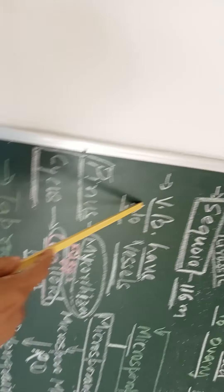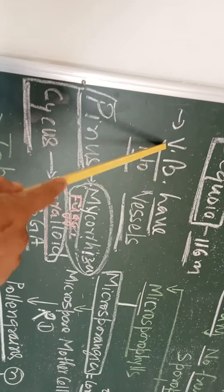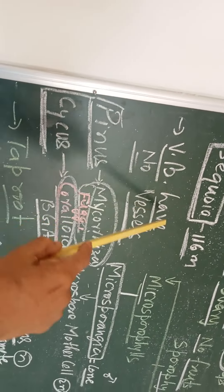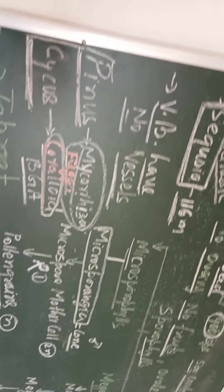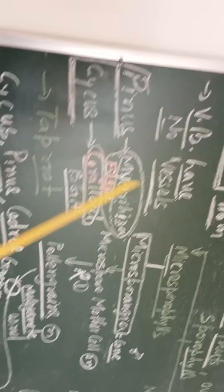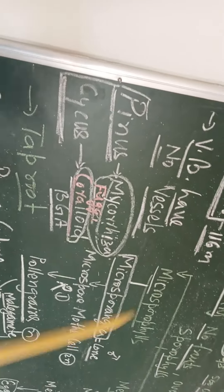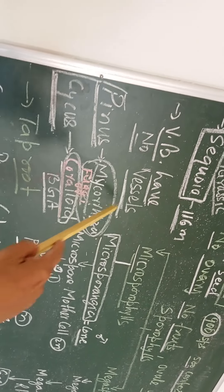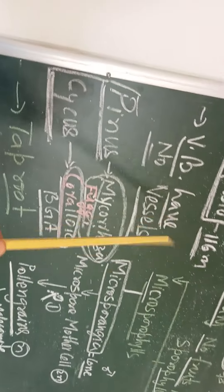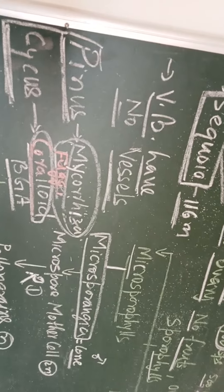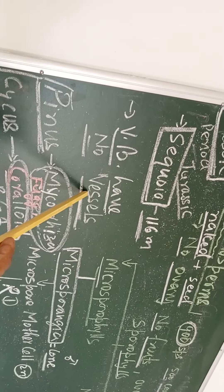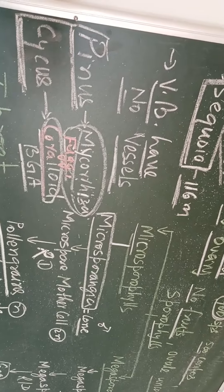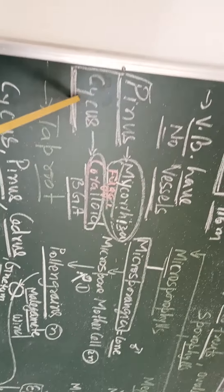Now, vascular bundle. Other features here you must remember: VB means vascular bundle, have no vessels. Unlike bryophytes which have no vascular system, pteridophytes and gymnosperms have vascular bundle but have no vessels. Vessels is the characteristic feature of angiosperms. Here you have to remember that the vascular bundle in gymnosperms is without vessels, but in angiosperms they have vessels.